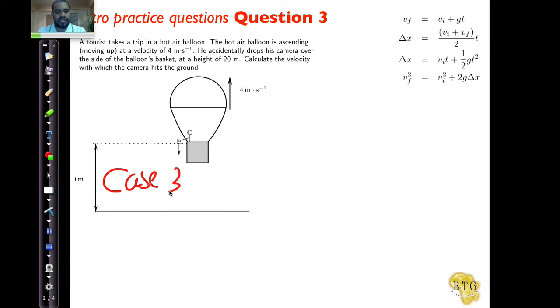We are looking at a case three example. Our strategy is always read the question first, identify the case, indicate your reference system, which I'm going to do right now, and put upwards as positive and downward as negative. This is the system I'm choosing. It's all about how you interpret the plus and the minus.